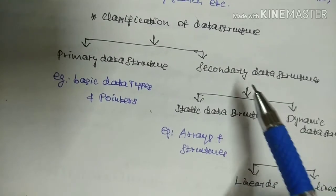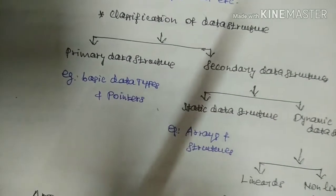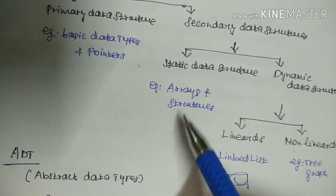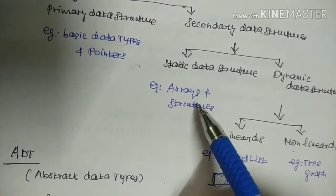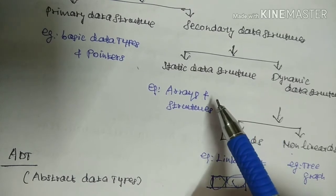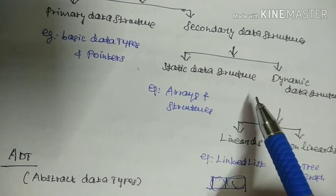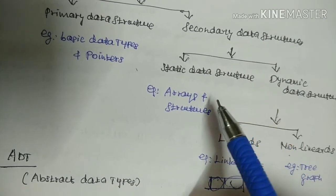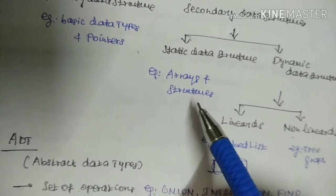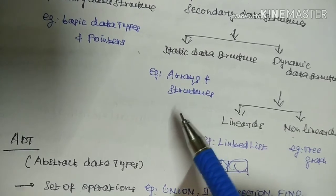Next, Secondary Data Structure. It is derived from Primary Data Structure and has two types: Static Data Structure and Dynamic Data Structure. Examples of Static Data Structure are Arrays and Structures. Arrays store all data of similar types such as Integer, Float, or Character. Structure is used to store all types of data — Integer, Float, Char, Double — together.